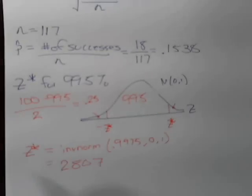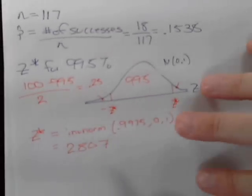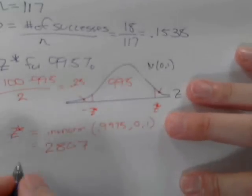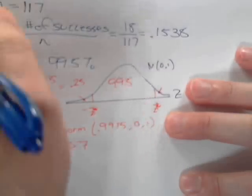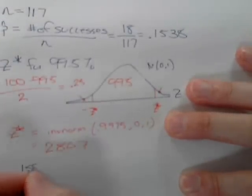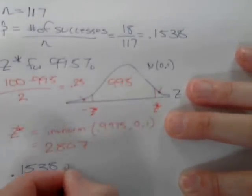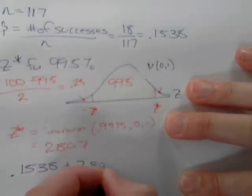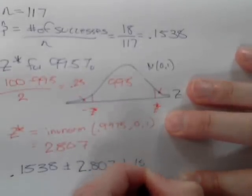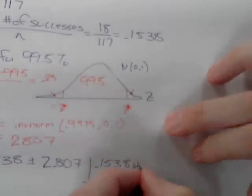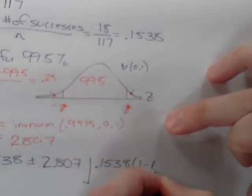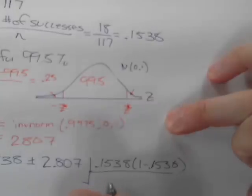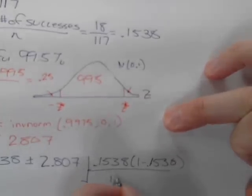Substituting all of these values into the formula, we have p-hat which is 0.1538 plus or minus z-star which is 2.807 times the square root of 0.1538 times 1 minus 0.1538 over the sample size of 117.